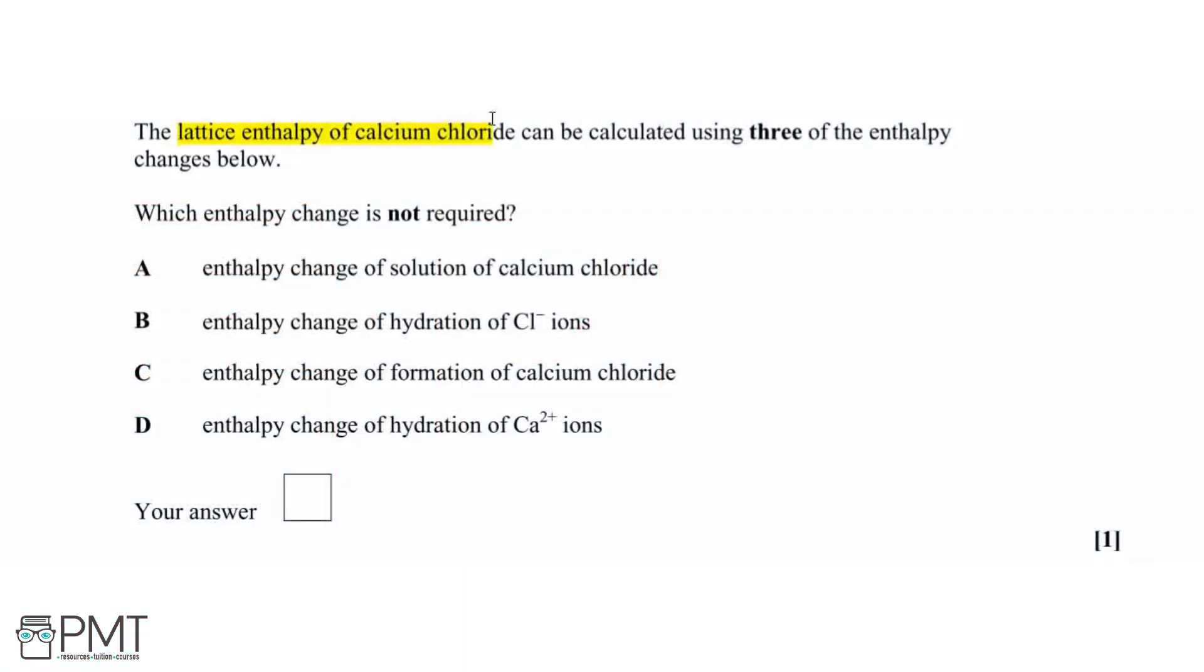The lattice enthalpy of calcium chloride can be calculated using three of the enthalpy changes shown below. And for this question, we need to identify which enthalpy change is not required. So the four options we have here are the enthalpy change of solution of calcium chloride, the enthalpy change of hydration of the chloride ions, the enthalpy change of formation of the calcium chloride, and the enthalpy change of hydration of the calcium ions.